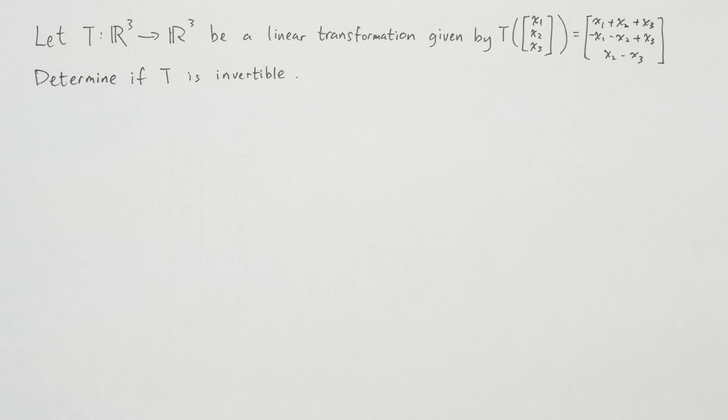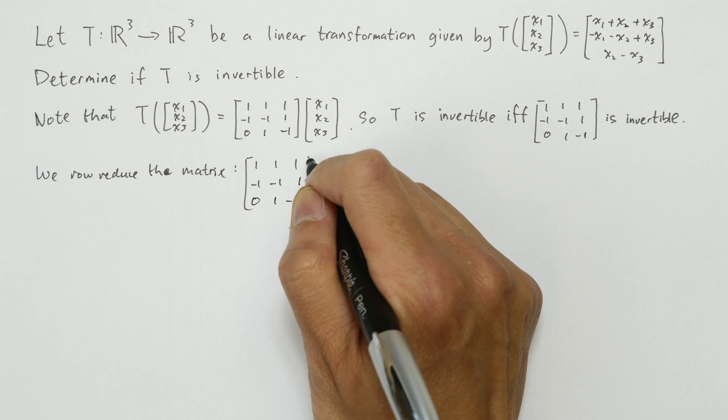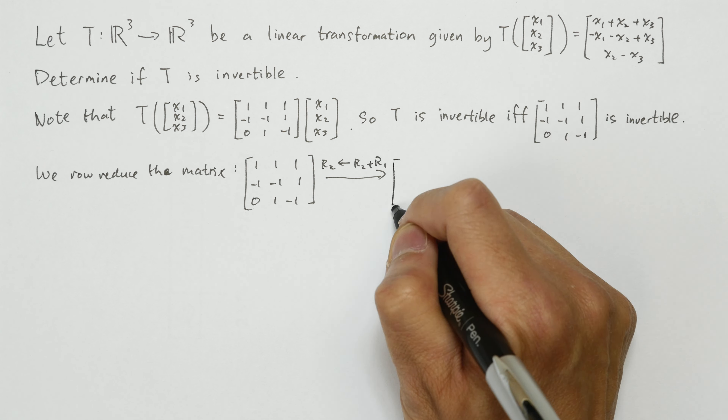T is invertible if and only if the matrix is an invertible matrix. So what we want to do is row reduce this matrix.